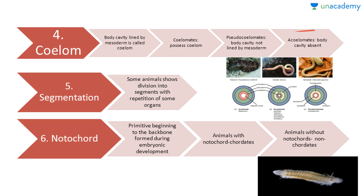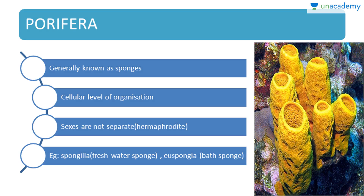Fifth, segmentation — some animals show division into segments with repetition of some organs. Sixth, notochord — the notochord is the primitive beginning of the backbone, formed during embryonic development. Animals with a notochord are called chordates, and animals without a notochord are called non-chordates.